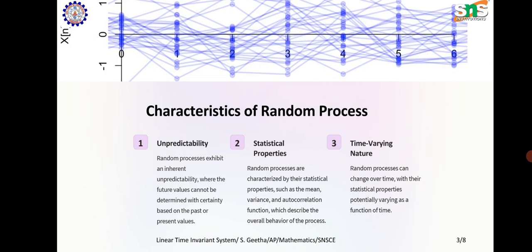Characteristics of random process: Unpredictability — random processes exhibit an inherent unpredictability where future values cannot be determined with certainty based on past or present values. Statistical properties — random processes are characterized by mean, variance, and autocorrelation function, which describe the overall behavior of the process. Time-varying nature — random processes can change over time, with their statistical properties potentially varying as a function of time.